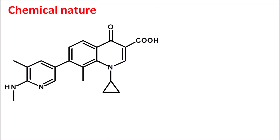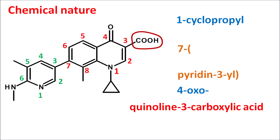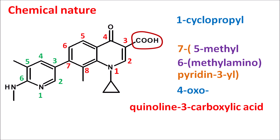Now let us see the chemical nature of this drug. This is the structure of ozenoxacin — we can clearly observe a quinoline moiety within this structure. Numbering the ring: positions 1 through 8. It has a carboxylic acid at position 3, so we can write this as quinoline-3-carboxylic acid. At position 1 it has a cyclopropyl group, and at position 4 a ketone group (4-oxo). At position 7 there is another heterocyclic ring system — a pyridine ring numbered 1 through 6, attached at its 3-position, so written as 7-(pyridin-3-yl). To this pyridine ring, a methyl group is present at position 5 (5-methyl) and a methylamino group at position 6 (6-methylamino). Finally, at position 8 of the quinoline ring a methyl group is present (8-methyl). That is the complete name of ozenoxacin.